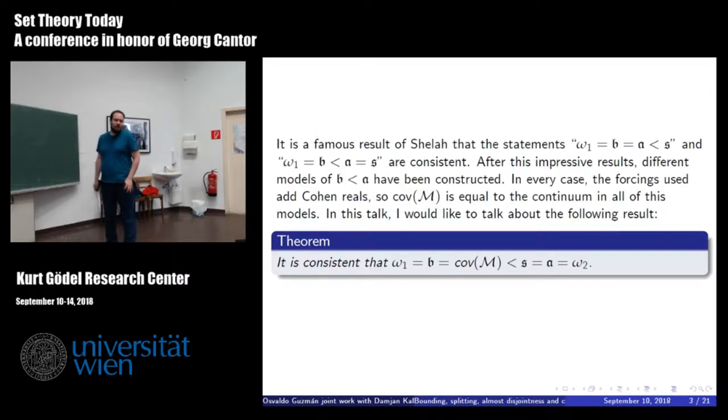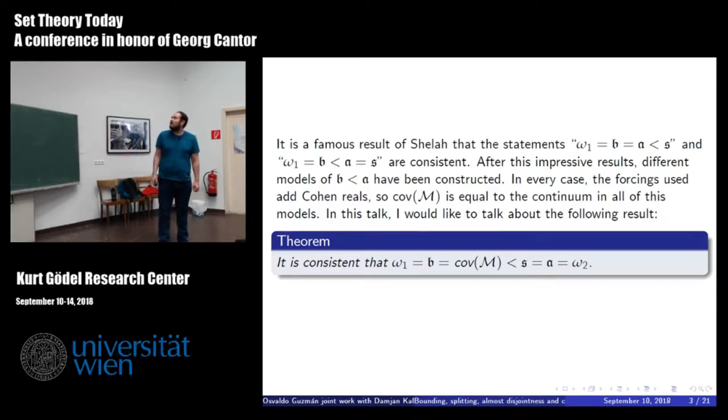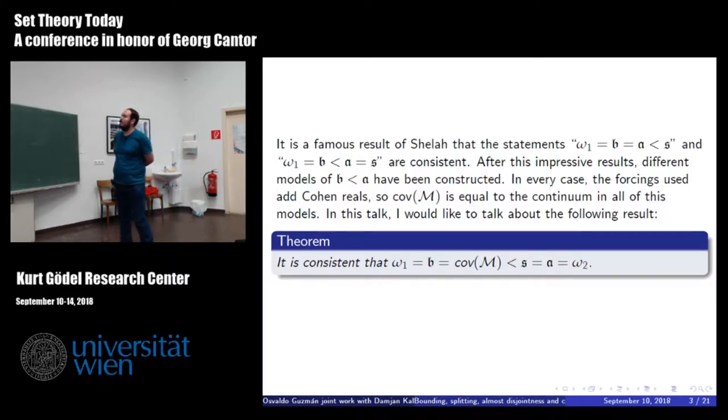So it is a famous result of Shelah that it is consistent to have omega_1 equals b equal a less than s. And also omega_1 equals b less than a equal s.